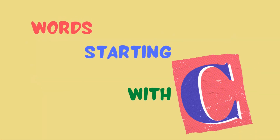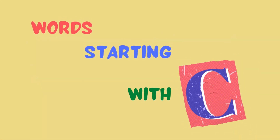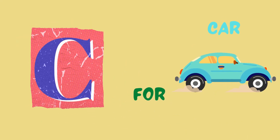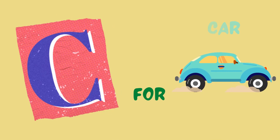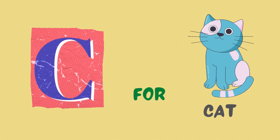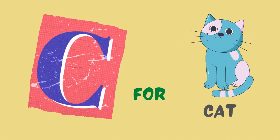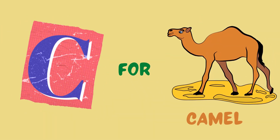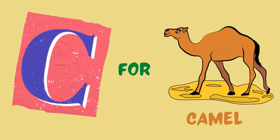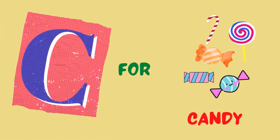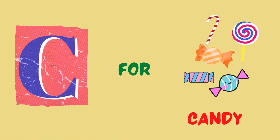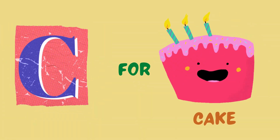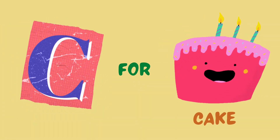Hey kids, let's do words starting with the letter C today. C for car, c-c-car. C for cat, c-c-cat. C for camel, c-c-camel. C for candy, c-c-candy. C for cake, c-c-cake.